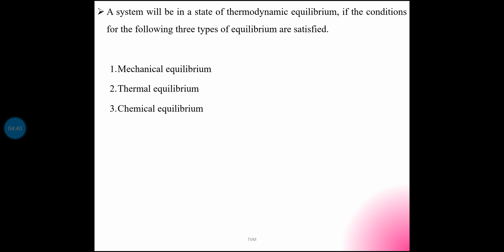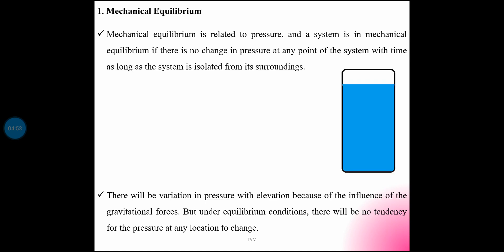The three types are: Mechanical Equilibrium, Thermal Equilibrium, and Chemical Equilibrium. First: Mechanical Equilibrium. Mechanical equilibrium is related to pressure. A system is in mechanical equilibrium if there is no change in pressure at any point of the system with time, as long as the system is isolated from its surroundings.